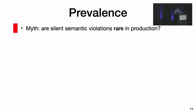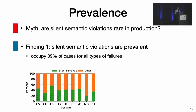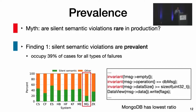A common assumption is that correctness-related issues are typically eliminated in the testing stage, so silent violations should be rare in production. Our results suggest otherwise. We found that silent semantic violations occupy almost 40% of all types of user-reported failures. Interestingly, MongoDB has the lowest ratio among all systems we study. We noticed that MongoDB developers had many invariant checks since 2014, and these production-enabled assertions help expose subtle issues and convert many failures into crash failures.